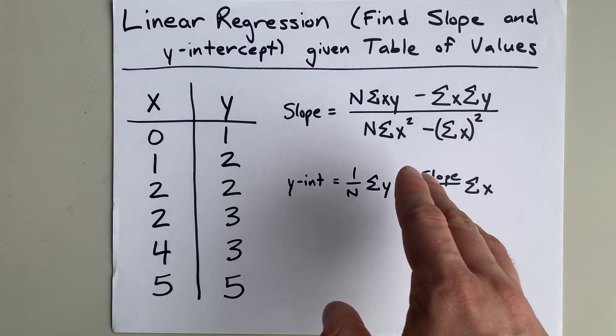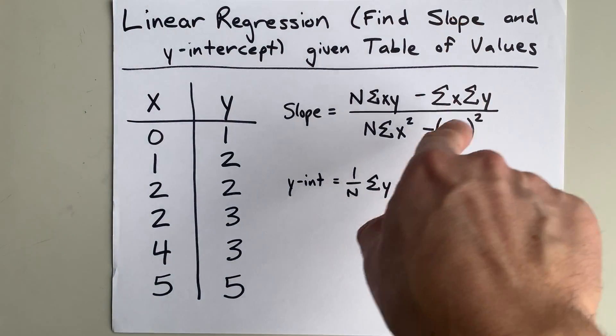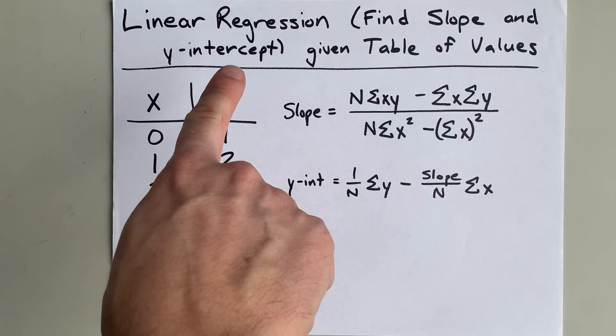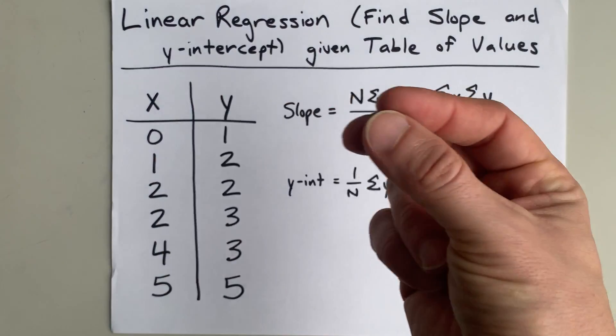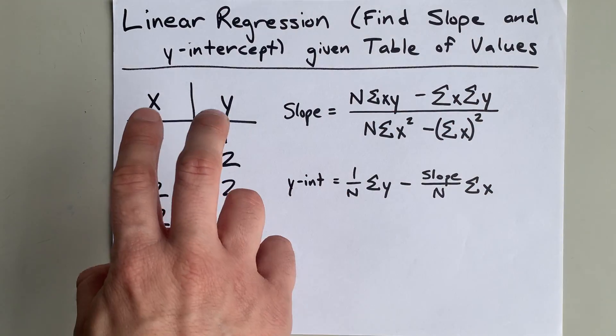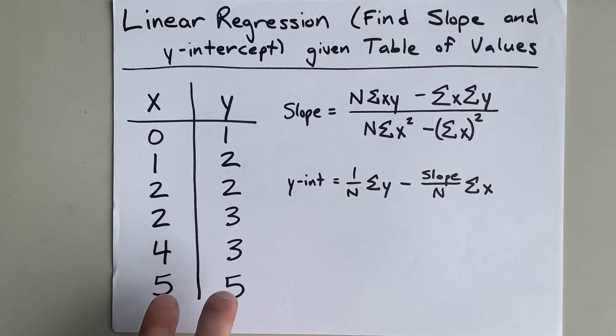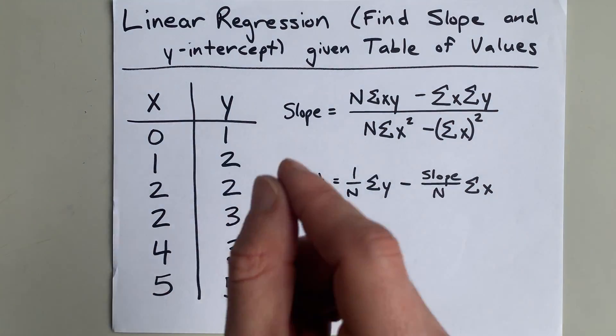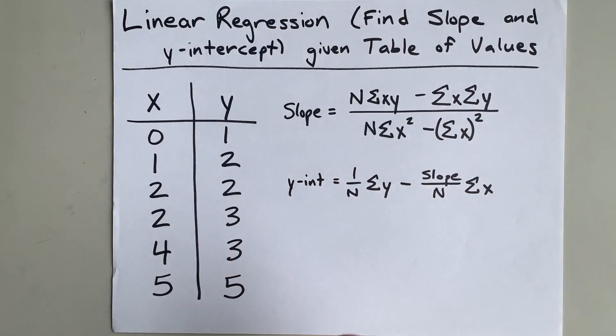We are going to find the slope and y-intercept of the line of best fit from a table of values by hand.